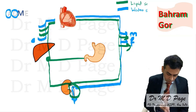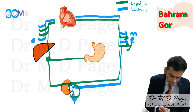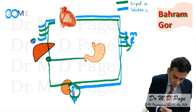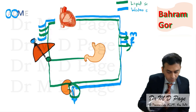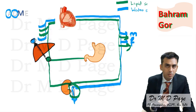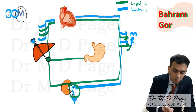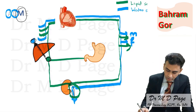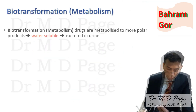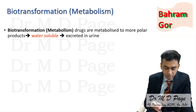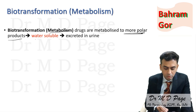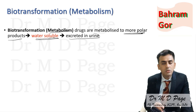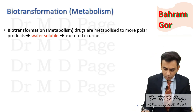That something is our liver. What the liver does is convert the lipid soluble drug into a water soluble drug. This process — conversion of lipid soluble to water soluble — is nothing but metabolism, or biotransformation of drugs. Biotransformation is the preferable term; metabolism can also be used. Drugs are metabolized to more polar, water soluble products, which get excreted into urine.